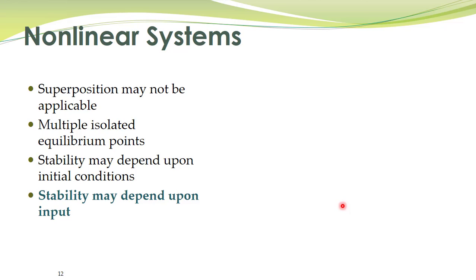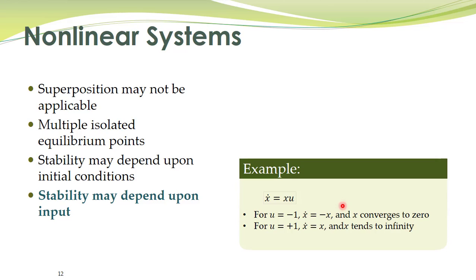For nonlinear systems, stability may also depend upon the input. For linear systems, stability is independent of input — a stable system remains stable for any bounded input. That is not the case for nonlinear systems. For example, the system x-dot equals x times u: for u equal to minus 1 the dynamics become x-dot equals minus x, which is clearly stable. For u equal to plus 1 the system is obviously unstable. So for nonlinear systems, stability may depend on the input.